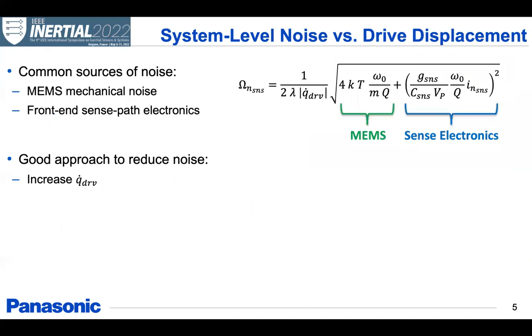Now, when it comes to the system-level noise of the part, we obviously want to improve the quality factor as much as possible, but we want to look for other places where noise can be improved. If we look at common sources of noise, we can think of the MEMS mechanical noise of the sense mode, so the contribution of thermal noise of the sense mode, and the contribution of the front-end sense electronics, which is a combination of thermal and flicker noise. Here we can see that increasing Q improves the overall noise of the system, but another good approach to reduce noise is to increase the drive velocity, here noted as the derivative of the drive displacement Q drive.